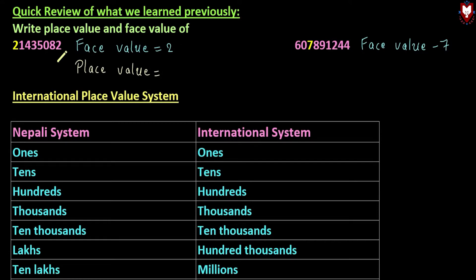When we count the positions — ones, tens, hundreds, thousands, ten-thousands — we identify the specific place values. So in this way we have to say specific place values. Now here we have two parts of the digits.